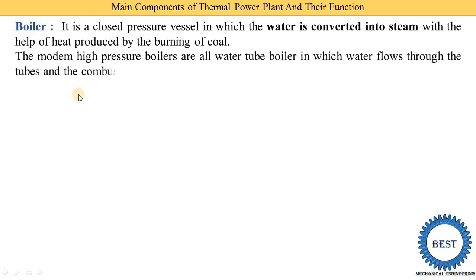Modern high-pressure boilers are all water tube boilers, in which water flows through the tubes and the gases flow across the tubes. In a water tube boiler, water is passed inside the tubes and the gases are passed outside the tubes.